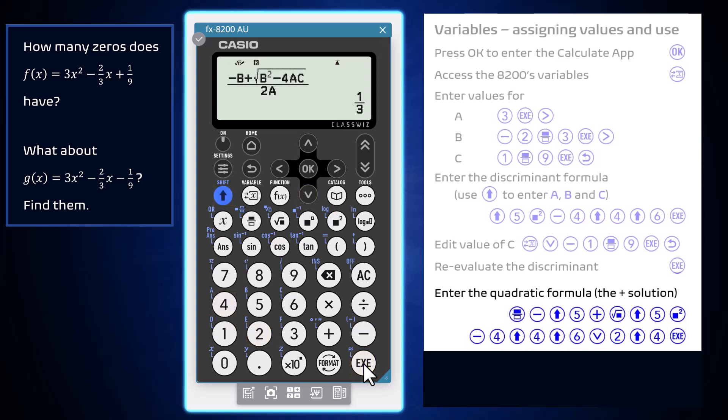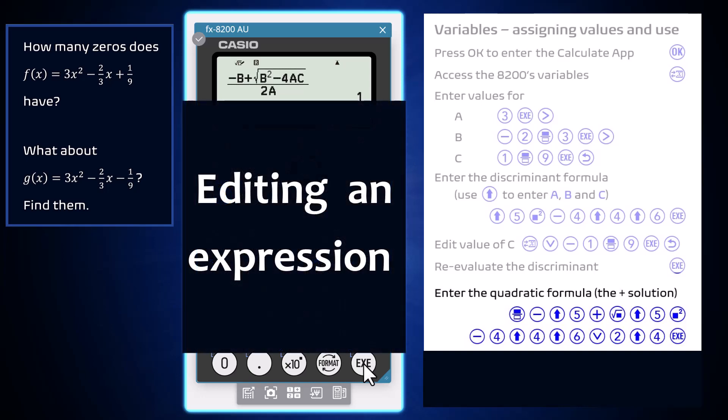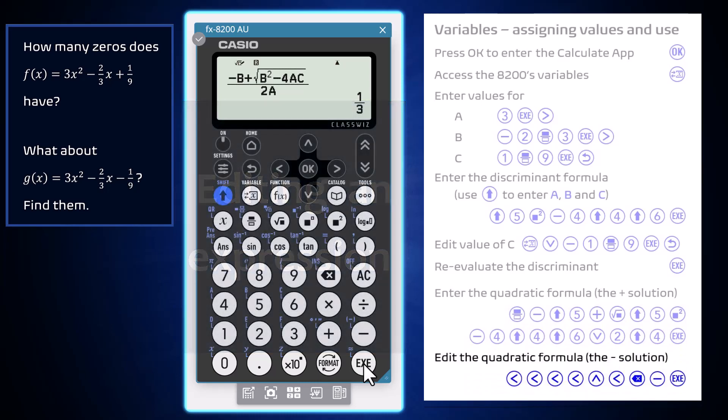Pressing Execute or OK, we see the larger of these two zeros is one third. To find the smaller of the zeros, we can edit the expression entered and change the plus to a minus. This can be done using the arrow keys to navigate and the delete key as required.